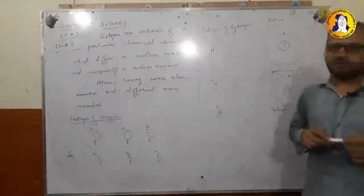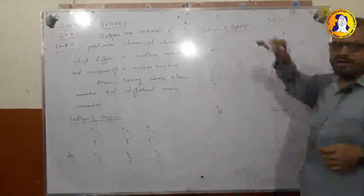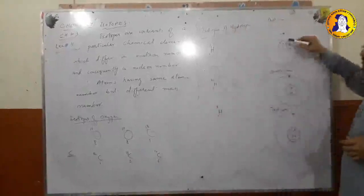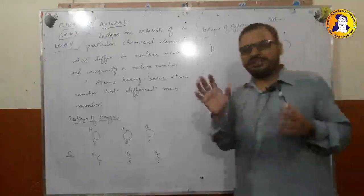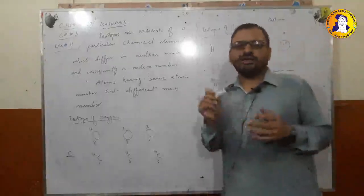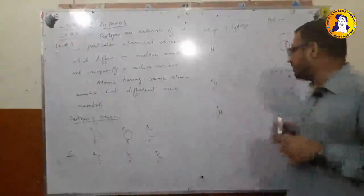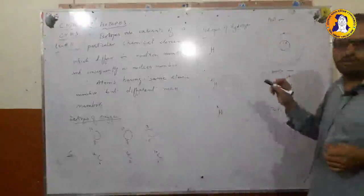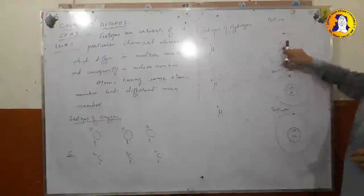For example, if we take hydrogen — hydrogen has atomic number one. It means hydrogen has one proton in the nucleus and one electron revolving around it. But hydrogen exists in nature in three different forms. These forms are possible due to the difference in the number of neutrons. In ordinary hydrogen there are no neutrons in the nucleus.